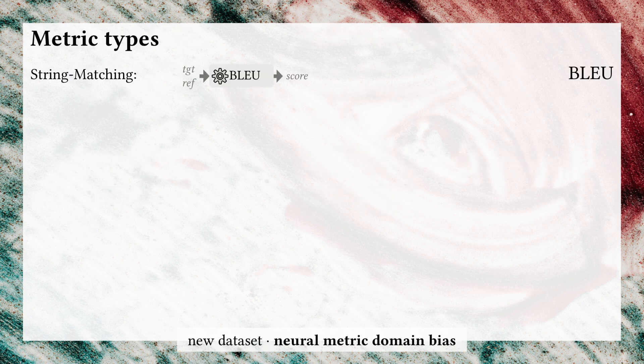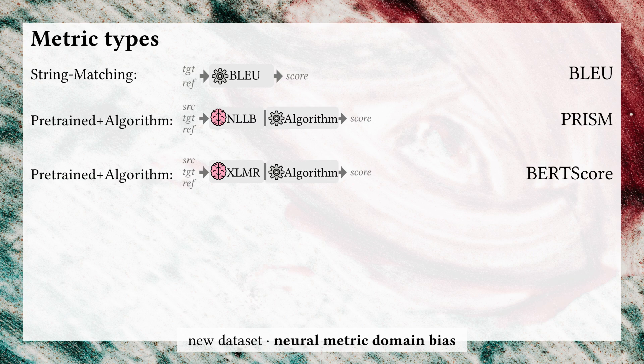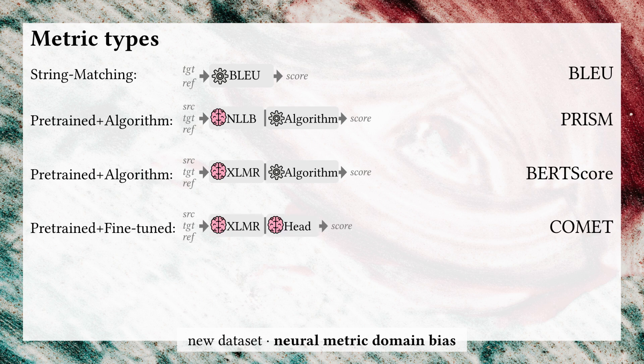To understand the problem, we first need to know what types of metrics there are. The simplest kind are string matching ones, such as BLEU or character-level F-score, which are just heuristic algorithms. Then there are metrics that use a pre-trained language model and with probabilities or alignments estimate the translation quality. COMET is a metric that also uses a pre-trained language model but is then also fine-tuned on human quality judgments. Now, how do we know that the last group — fine-tuned metrics — are biased?